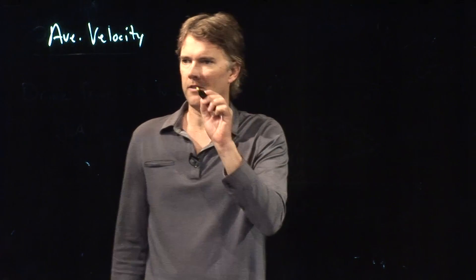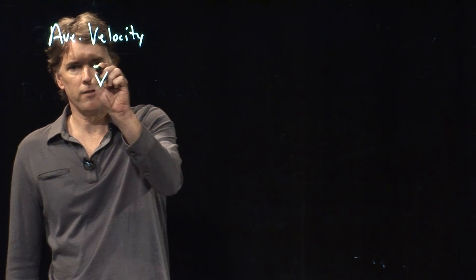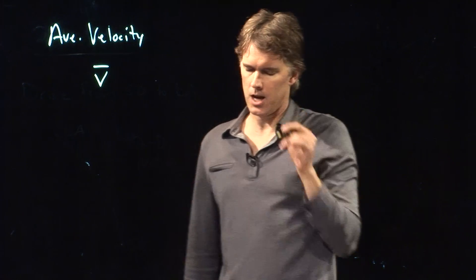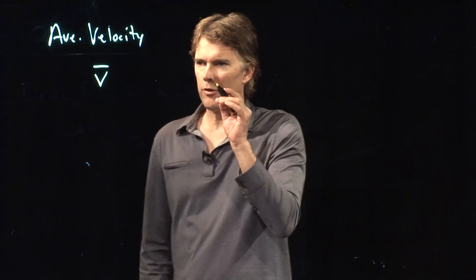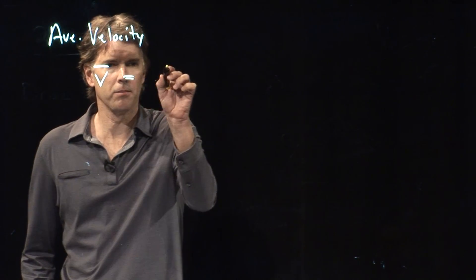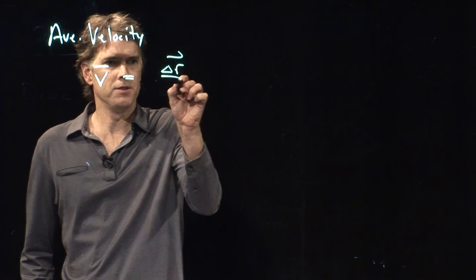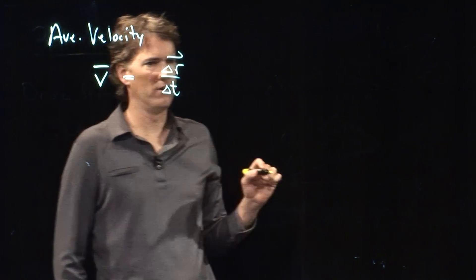So average velocity, it's still a vector, but for simplicity we just write it with a bar on top without that arrow. And average velocity is simply this: Delta R over Delta T.